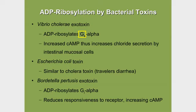Now, pertussis toxin ADP ribosylates alpha I, and by ADP ribosylation of alpha I, it inhibits alpha I from working. So now you're inhibiting the inhibitor. And by inhibiting the inhibitor, adenylyl cyclase is free to work — it is free to make cyclic AMP. That's why cyclic AMP levels rise in the presence of pertussis toxin.